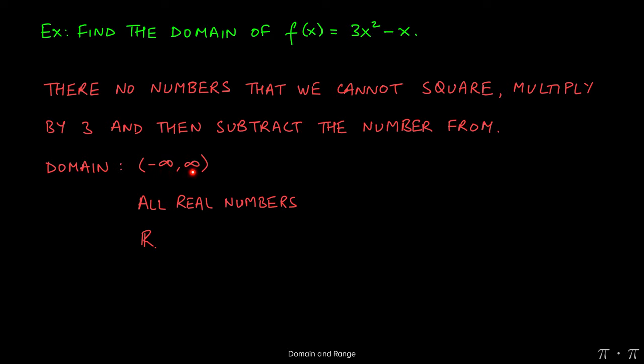That means that any number from negative infinity to positive infinity can be plugged into this function 3x² - x, and it will give you an appropriate output value. And that's it.